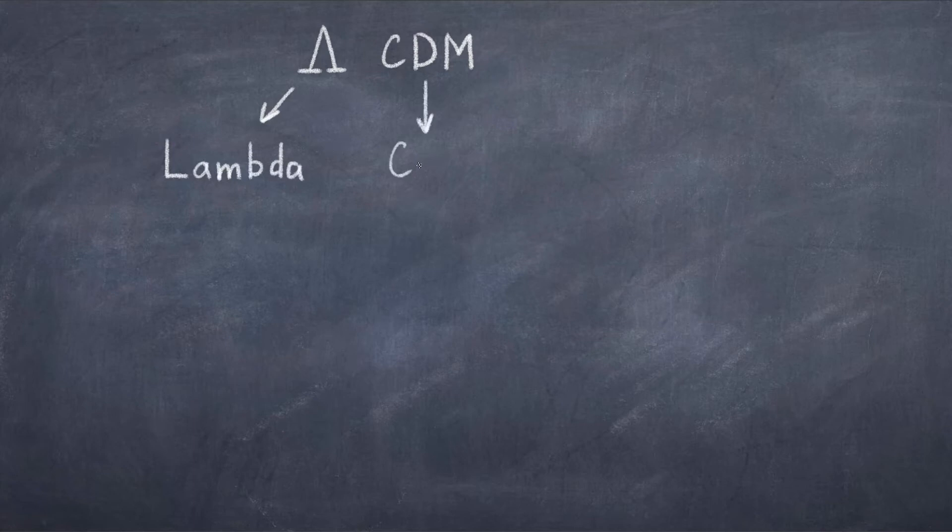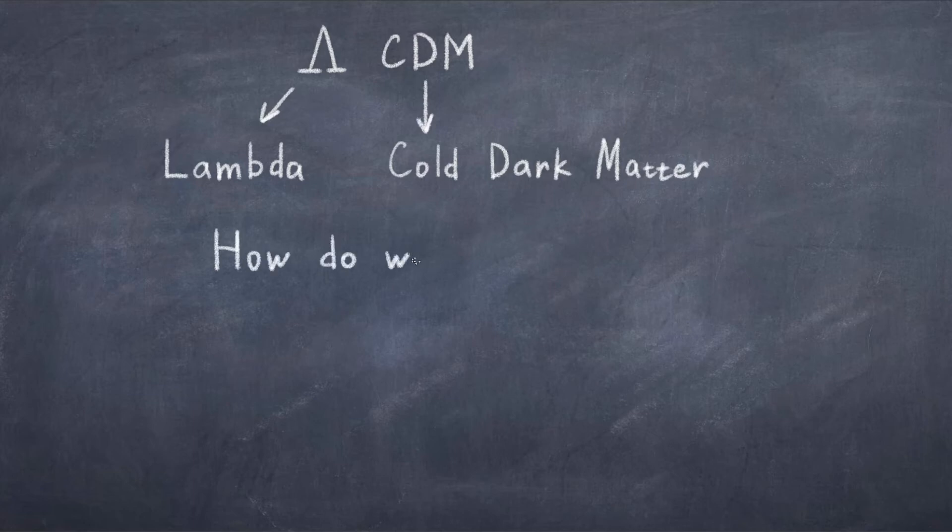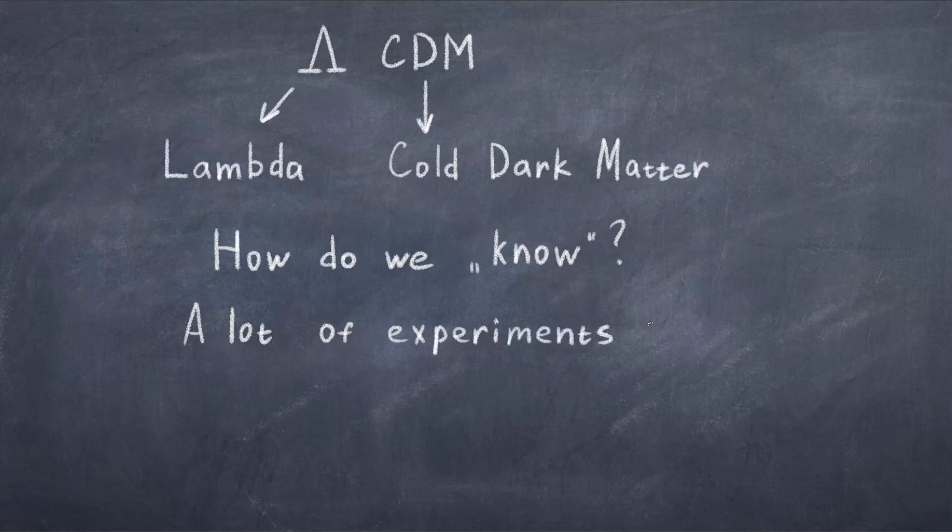I will admit that dark matter and dark energy are rather crazy concepts, but this is actually where the name of the model comes from. Lambda is the dark energy, and CDM stands for cold dark matter, which is a particular type of dark matter which we will hopefully discover someday. At this point you might ask, how did we figure out this composition of the universe? The short answer is tons of experiments and observations of space, but to get into something more concrete we can consider the cosmic microwave background, which was actually discovered by accident in the 1960s.